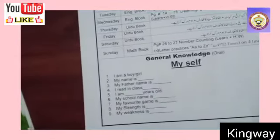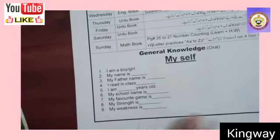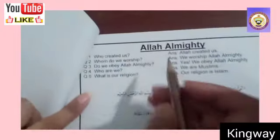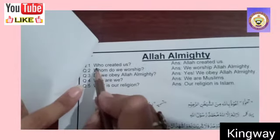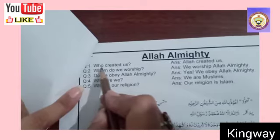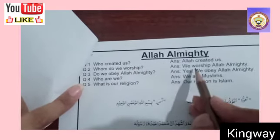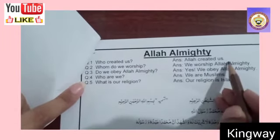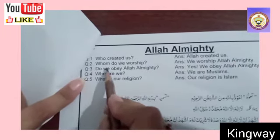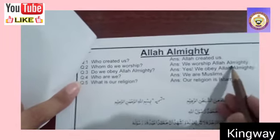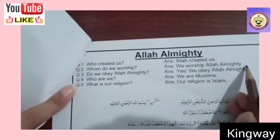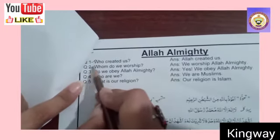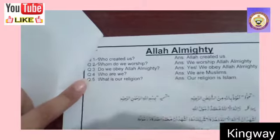Next, General Knowledge. We have completed My Self in General Knowledge. Today we will do the next topic: Allah Almighty. Question number one: Who created us? Allah created us. Question number two: How do we worship? We worship Allah Almighty. Okay — question number one and two — you have to remember these.